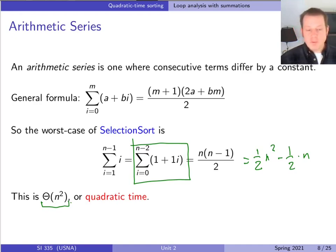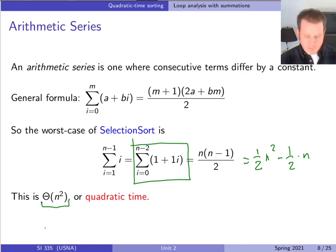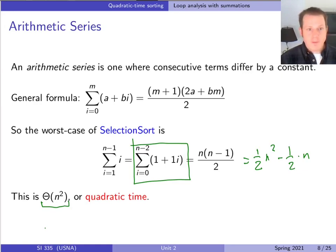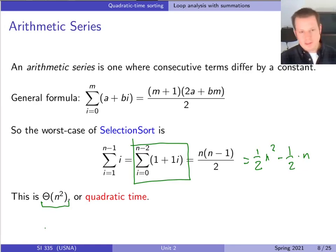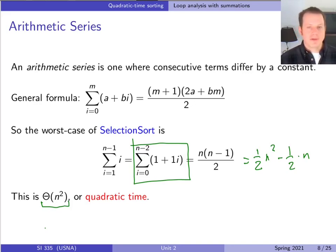So selection sort is quadratic time — big-Theta of n². At this point you should be able to use both of these methods to analyze selection sort. I want you to think about what would be slightly more difficult about analyzing insertion sort, and that's where we'll start for the next video.